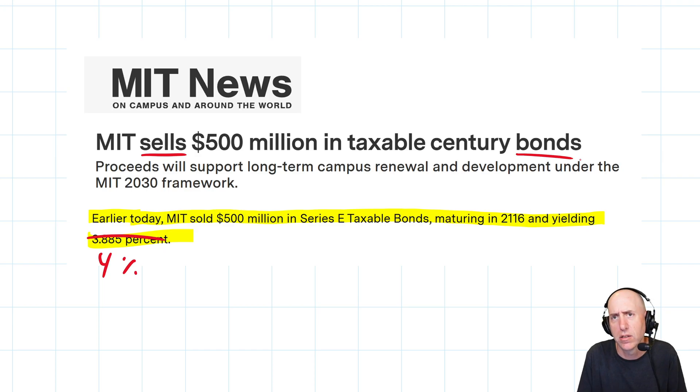When they sell bonds, it means if MIT wants to borrow money, of course they can go to the bank and say, 'Hey banker, I want to borrow $500 million,' and the banker could say yes or no.